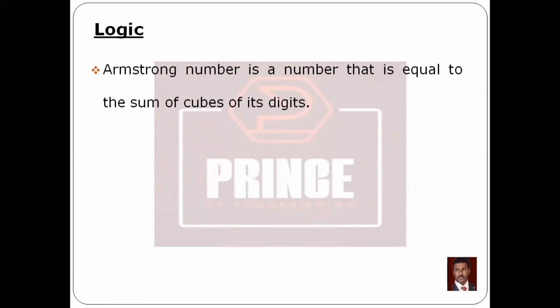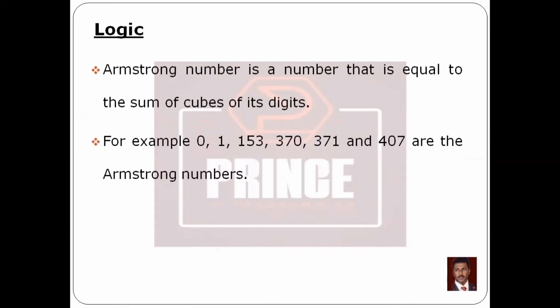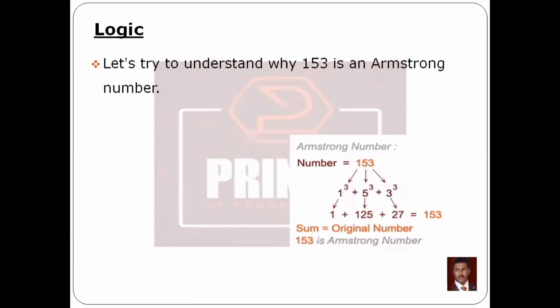If you have a number of digits, you can separate each digit, compute its cube, and then sum the cubes. If that sum equals the original number, that is the Armstrong number. Armstrong numbers include 0, 1, and 153.